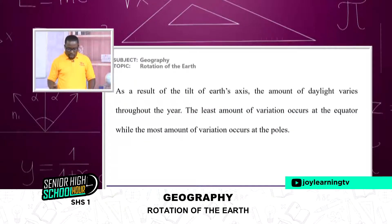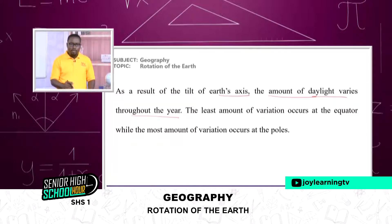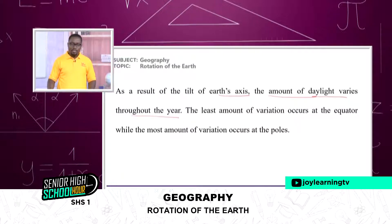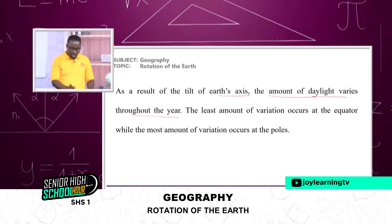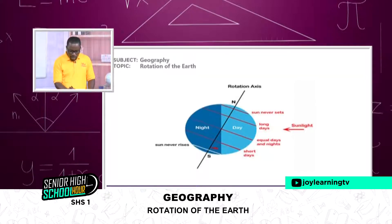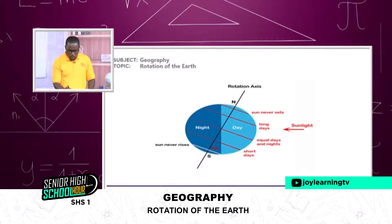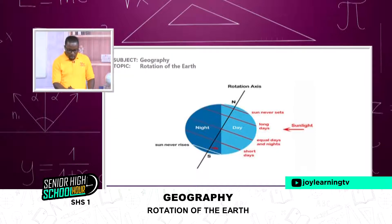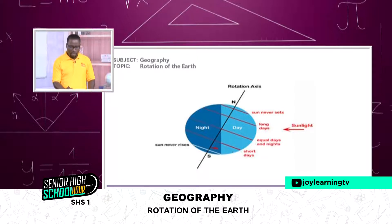As a result of the tilting of the earth's axis, the amount of daylight varies throughout the year. At certain times the earth tilts, and some people will be experiencing longer day and shorter night, and vice versa. The least amount of variation occurs at the equator, while the most amount of variation occurs at the poles. Those at the equator experience equal days and nights, those at the North Pole experience longer day, and those at the South Pole experience shorter day.